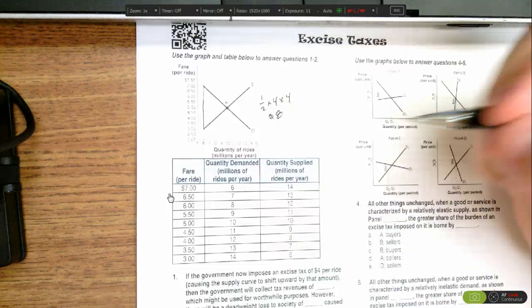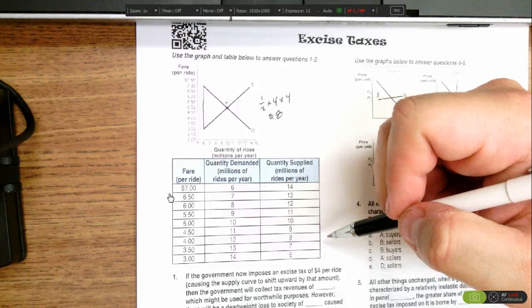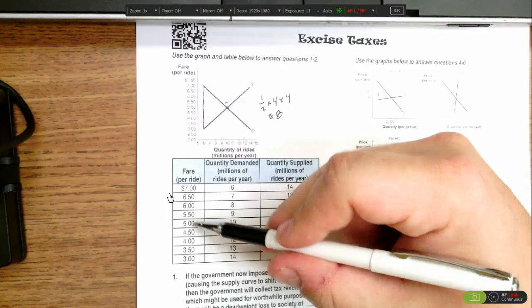The other way of doing it is to look at this chart. Again, we're looking for a $4 gap between supply and demand. If we look at equilibrium, which is at $5,